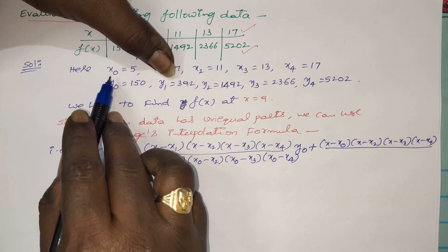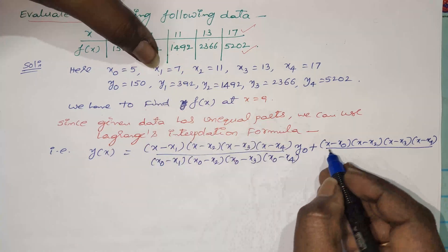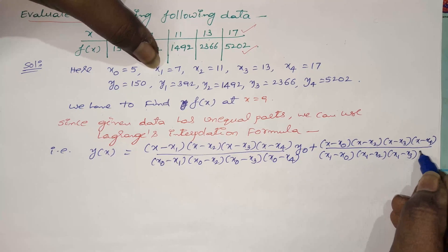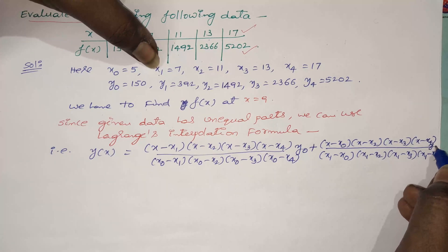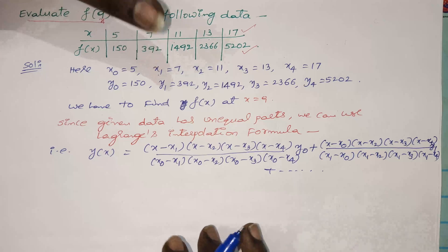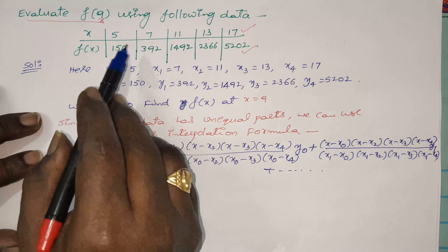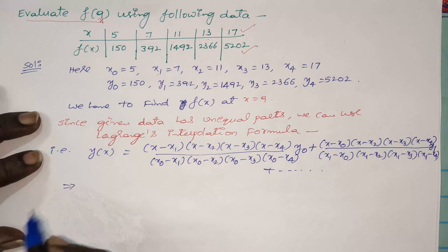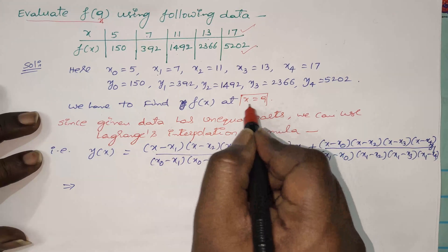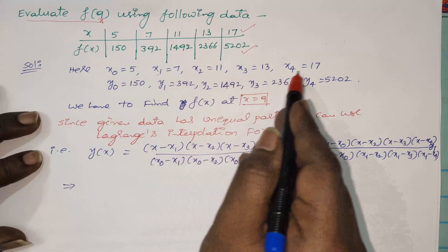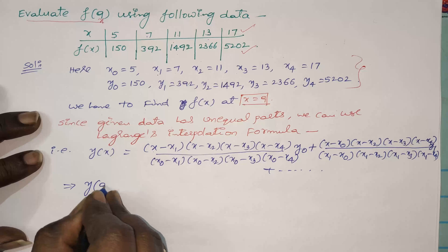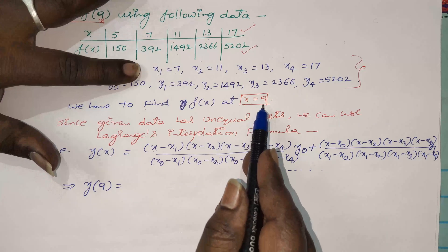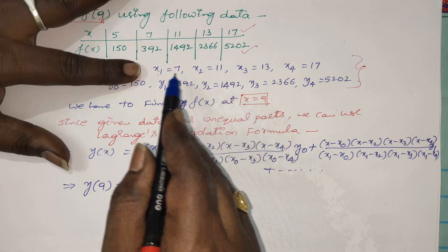In the next term, skip the second x value and write the subtractions of the remaining x values: (x minus x0)(x minus x2)(x minus x3)(x minus x4), divided by (x1 minus x0)(x1 minus x2)(x1 minus x3)(x1 minus x4), times y1, and so on. Since five values are given, you will get five terms in the formula. Now replace all x with 9 and substitute x0, x1, x2, x3, x4.